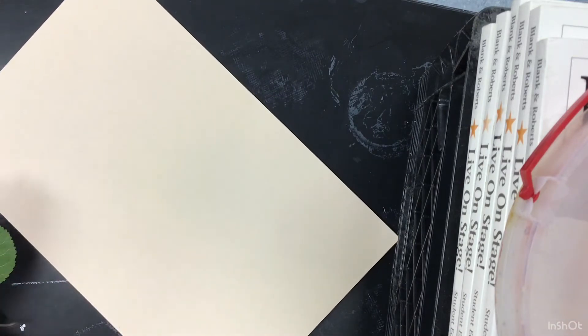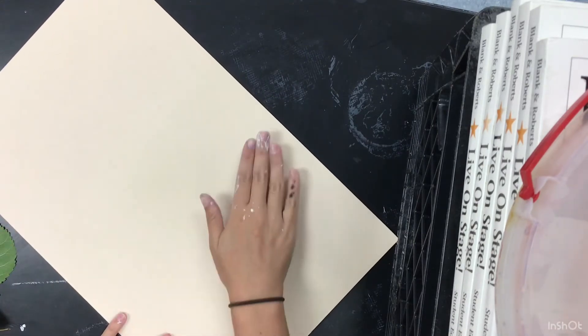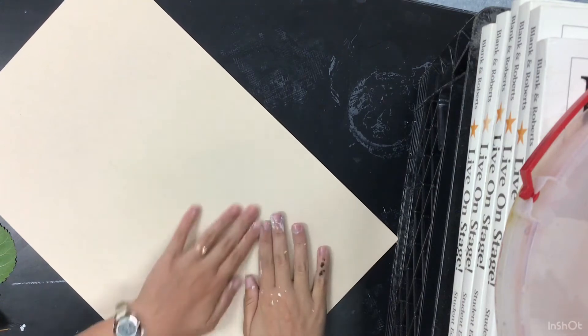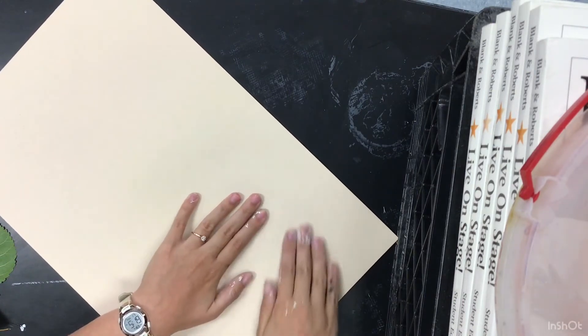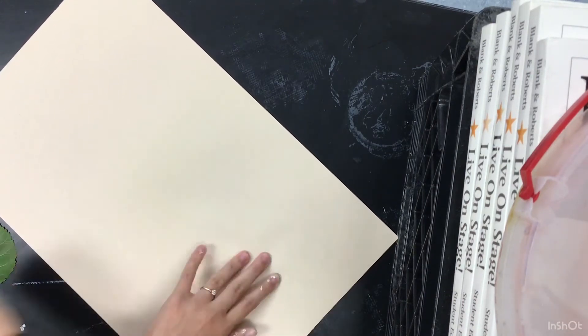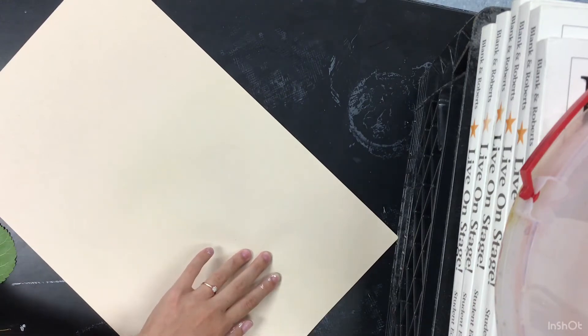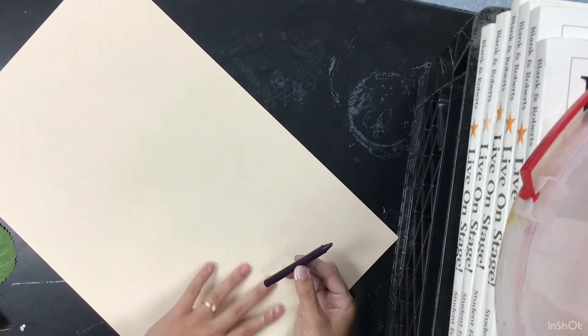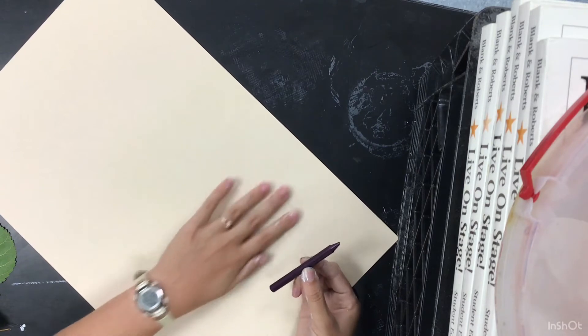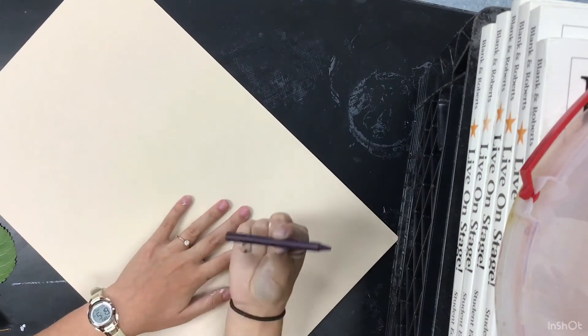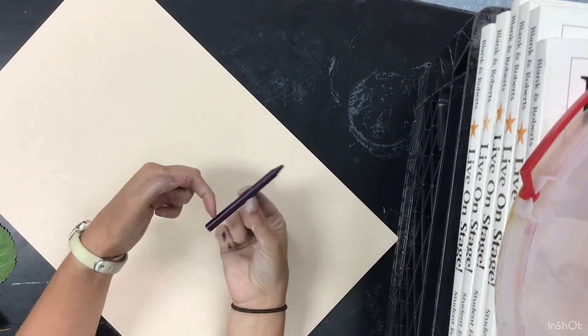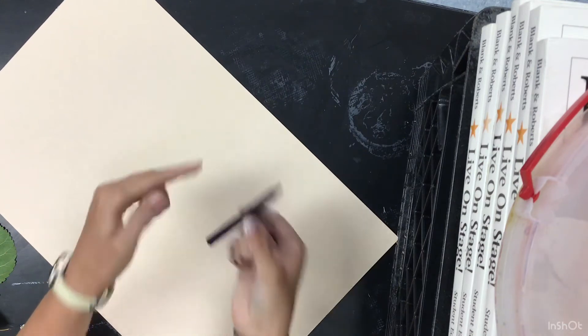I'm then going to feel on my paper where is my leaf. He's right here. So this is where I need to remember to keep my hand. I'm going to choose one of my colors, one of my fall colors. I have it pinched in the middle so I can use the entire crayon to rub and get color.